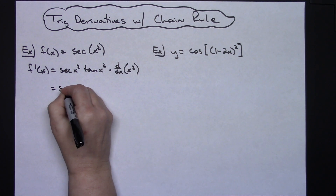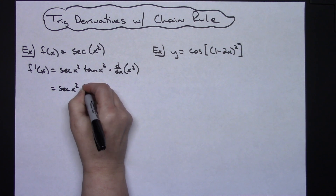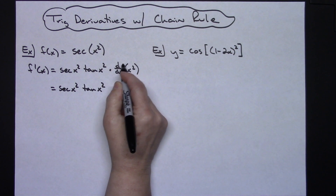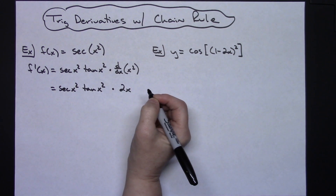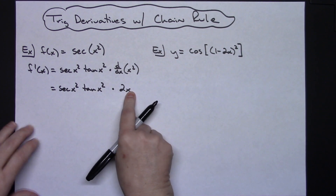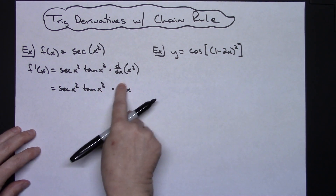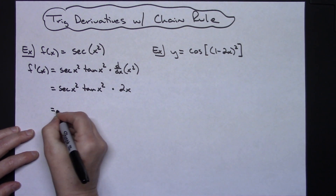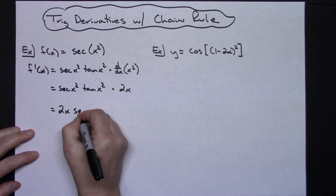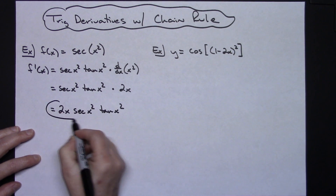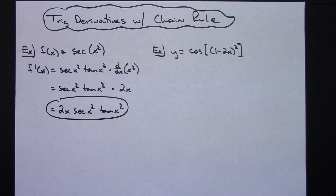The first half part is not going to change, so I'll have secant x squared times tangent x squared. Now the derivative of x squared is going to be 2x. You'll want to clean that up — I would move the 2x in front, so my final derivative would be 2x secant x squared tangent x squared. That had one straightforward chain rule in it.